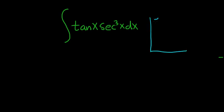If you have an even power of secant, you want to save a copy of secant squared. And if you have an odd power of tangent, you want to save a copy of secant tangent.